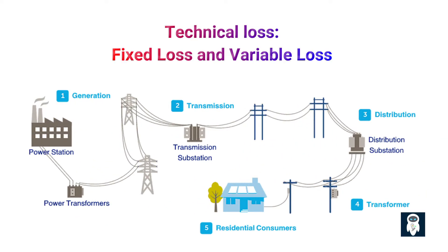Technical loss can be further divided into two categories: fixed loss and variable loss. Fixed loss is the loss of energy that does not depend on the current or the load, but on the voltage and the duration of the energization. Fixed loss occurs mainly in transformers, measuring devices, and control devices.